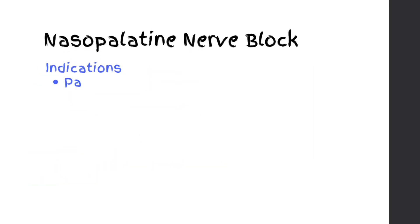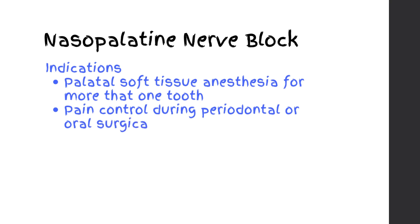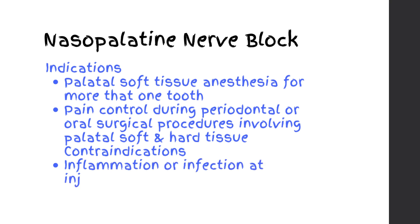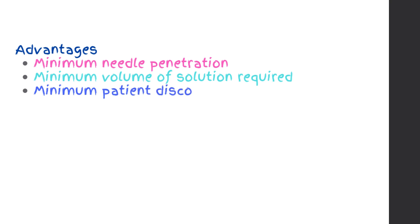Nasopalatine Nerve Block. Indications: palatal soft tissue anesthesia for more than one tooth; pain control during periodontal or oral surgical procedures involving palatal soft and hard tissue. Contraindications: inflammation or infection at injection site; smaller areas of therapy. Advantages: minimum needle penetration; minimum volume of solution required; minimum patient discomfort.